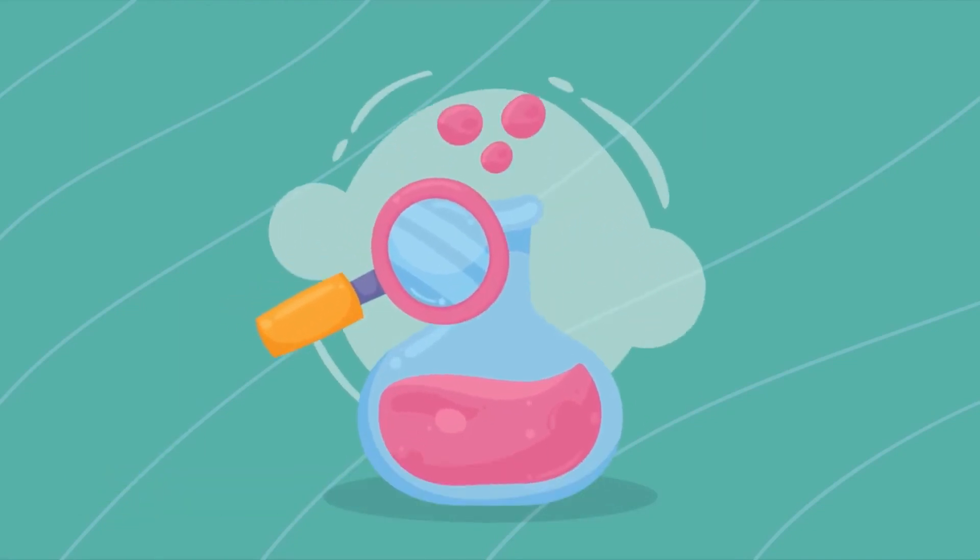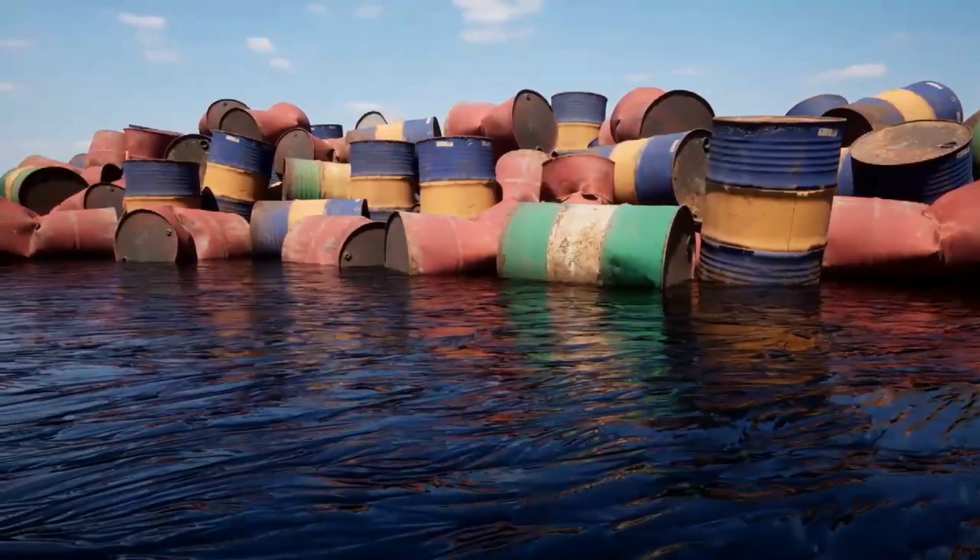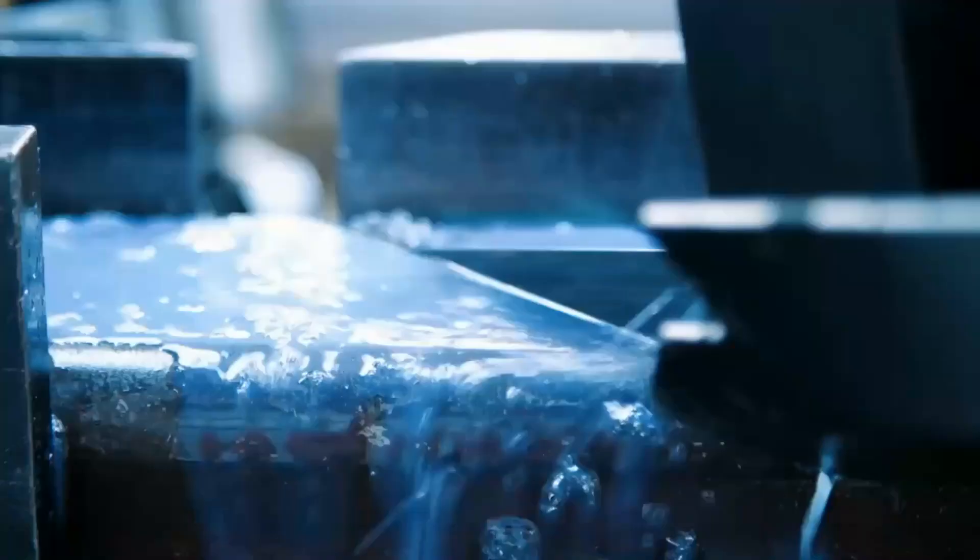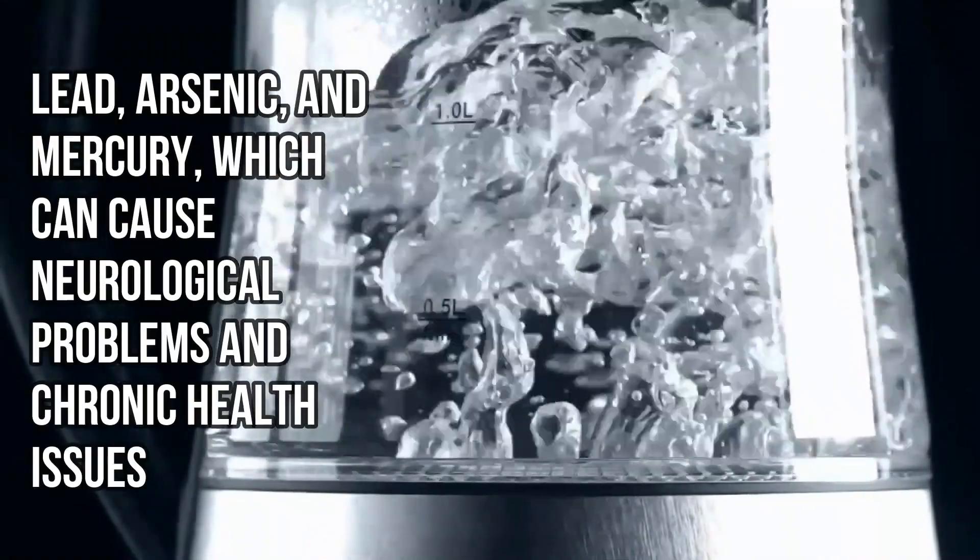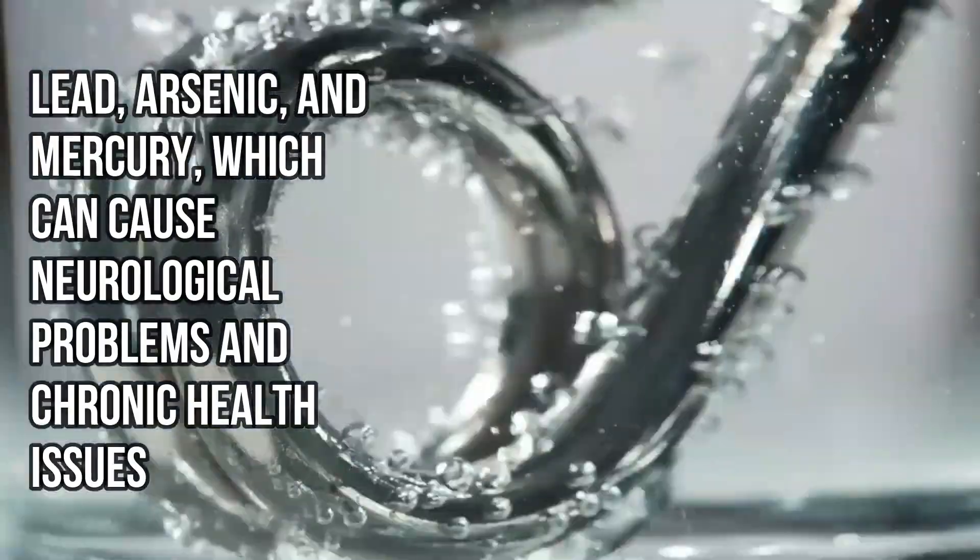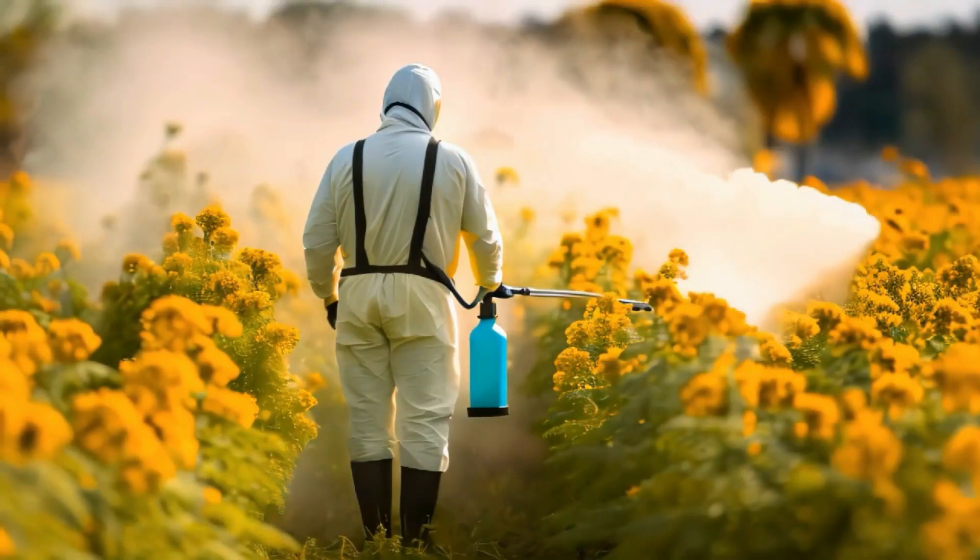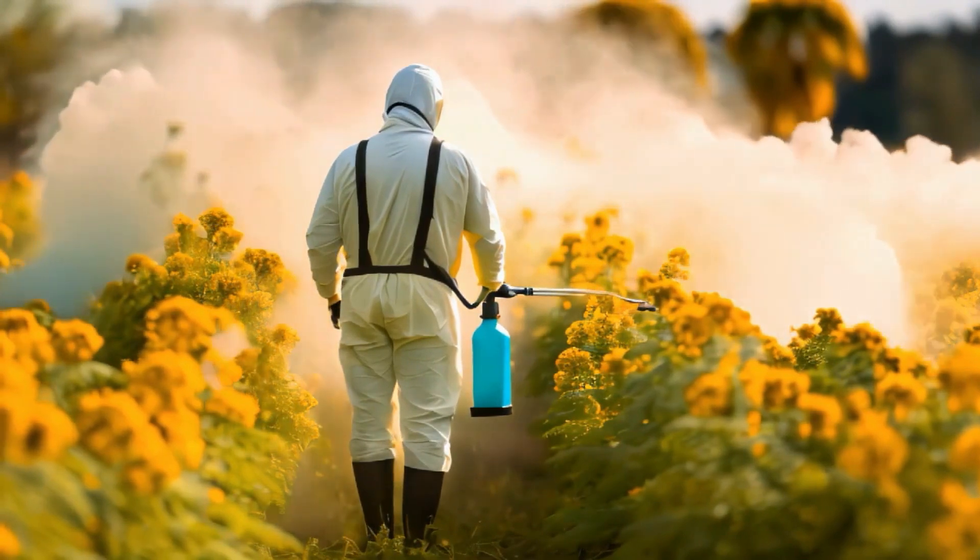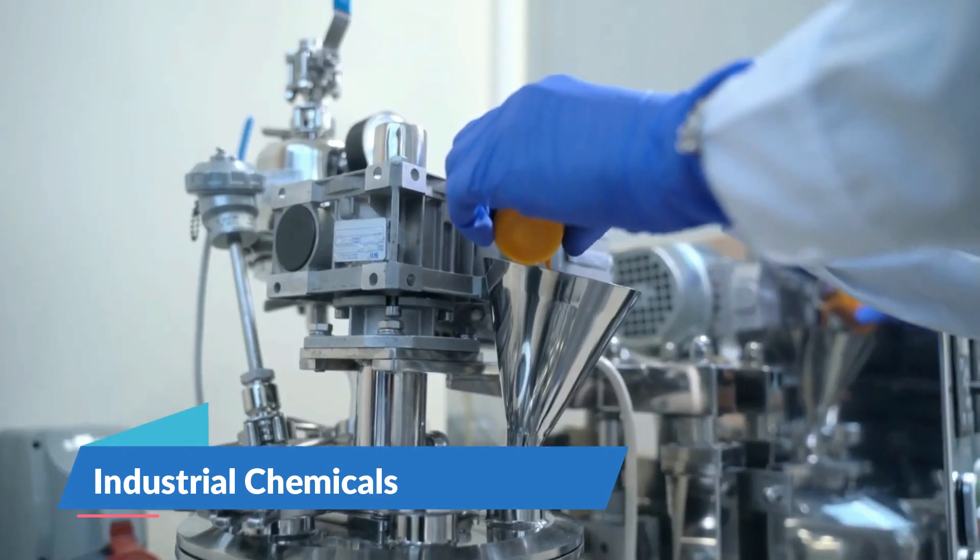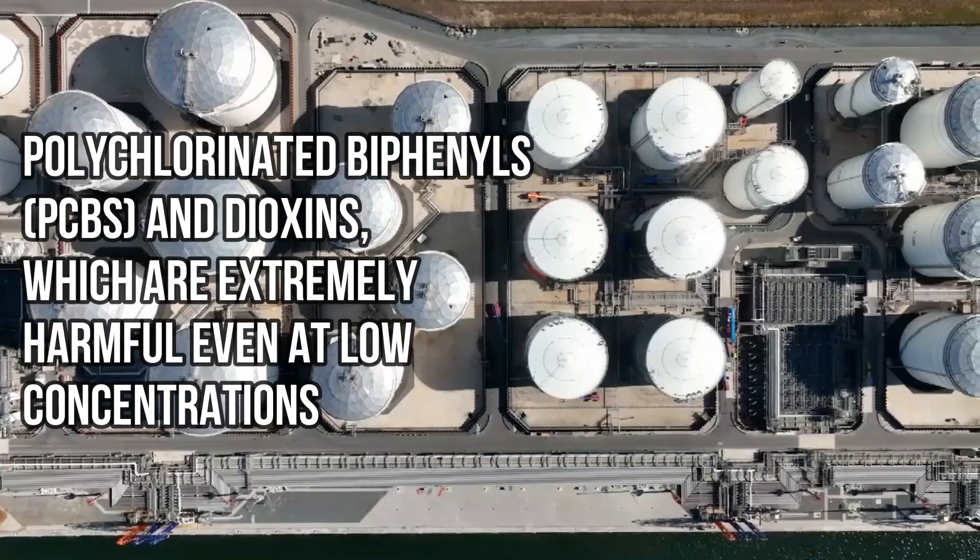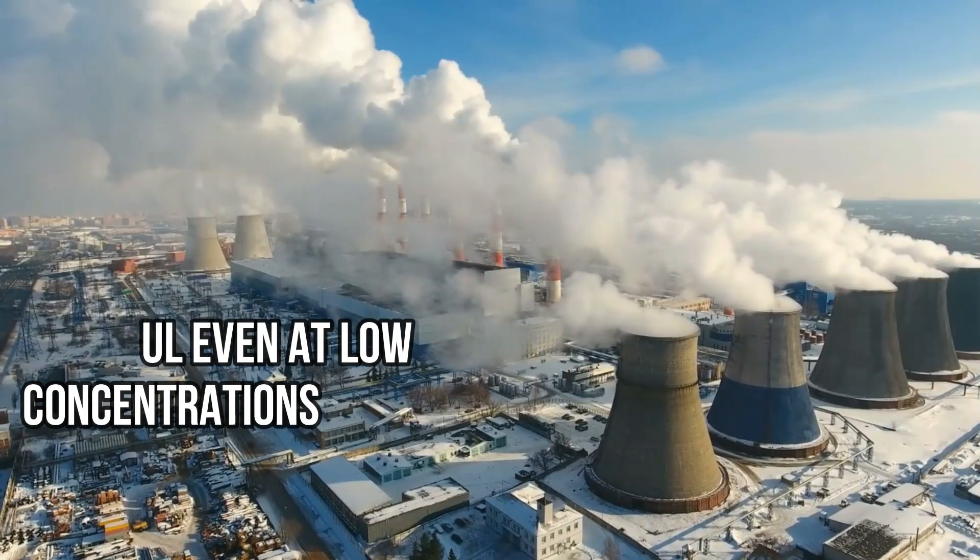Chemical contaminants can enter water sources through agricultural runoff, industrial discharge, or contamination from natural sources. Some common chemical contaminants include heavy metals such as lead, arsenic, and mercury, which can cause neurological problems and chronic health issues. Pesticides and herbicides often used in agriculture can runoff into water sources and are linked to a variety of health problems, including hormonal disruptions and cancer risks. Industrial chemicals such as polychlorinated biphenyls (PCBs) and dioxins are extremely harmful even at low concentrations.